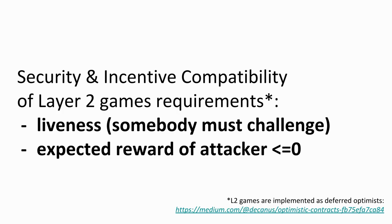Now briefly, some more general thoughts on layer two scalability. There's a liveness assumption because somebody must go to chain and challenge, which creates the requirement for maybe some watchtower services. You also want the expected reward of an attacker to be less than zero, because if you have a coin worth 10,000 Ether, you don't want an attacker to spam-attack the coin for a year until they succeed. So we attach some sort of fidelity bond that the attacker forfeits each time they get challenged.